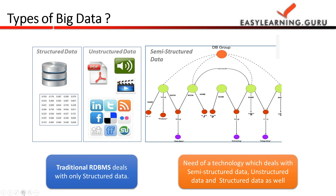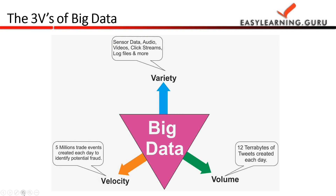Now we have the three V's of big data, which are the main characteristics: volume, variety, and velocity. In terms of volume, earlier data was only generated by employees of an organization, but these days data comes from employees, partners, and customers as well — for example, 12 terabytes of tweets created each day. For variety, data used to be only Excel files or database records, but now it includes pure text, photos, audios, videos, web pages, GPS data, sensor data, documents, and SMS.